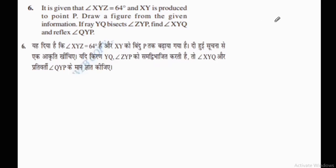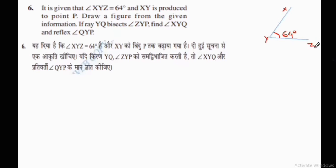So we will try to draw a picture here from the given information. Let's draw an angle here — we will draw angle XYZ equal to 64 degrees. We draw one line from this point and another line from this point. Now, in the question, XY is produced to point P — 'produce' means the line is extended to point P.